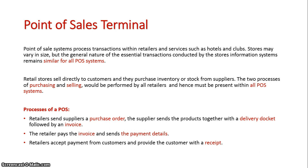Although there are large department stores like Big W and Coles and small corner shops, basically all point-of-sales terminals work in a similar fashion. It all revolves around the store purchasing products from a supplier and selling the products to customers, with this process being automated by the system.